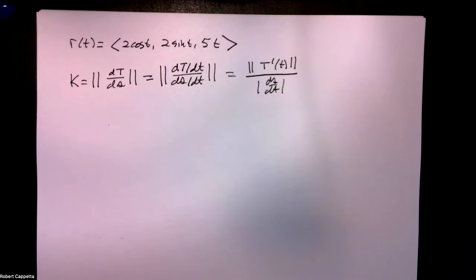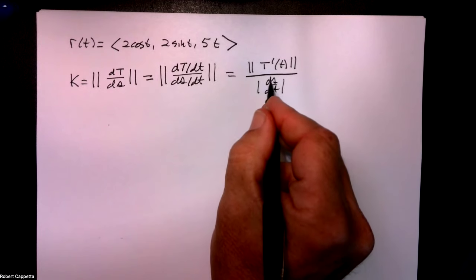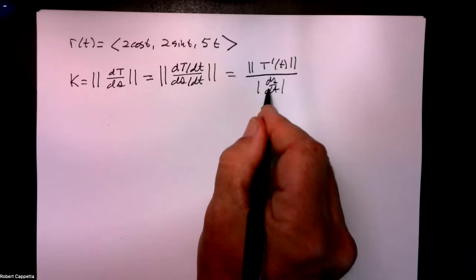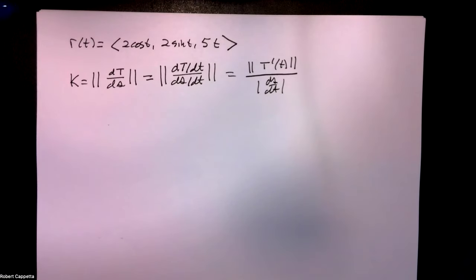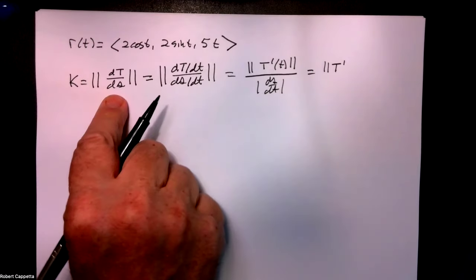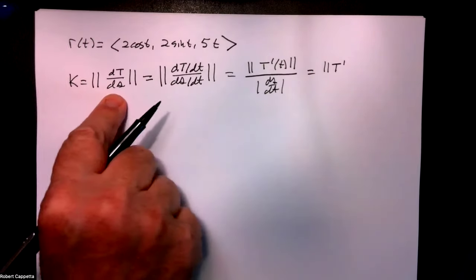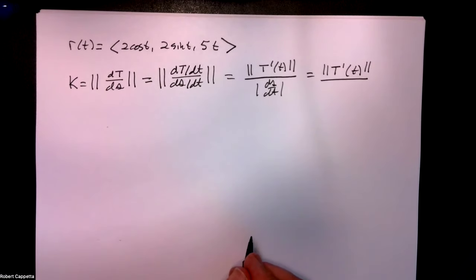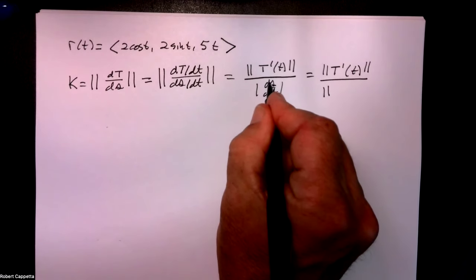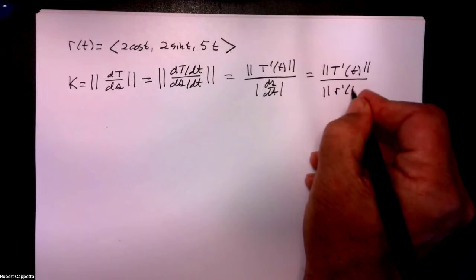What is the size of the rate of change of arc length with respect to time? That's the distance traveled — change in distance divided by time is speed. The magnitude of ds/dt is simply the magnitude of the velocity; it's the speed. So starting from dT/ds, which we motivated geometrically, we arrive at the formula: curvature is the magnitude of T'(t) divided by the speed — the magnitude of velocity.